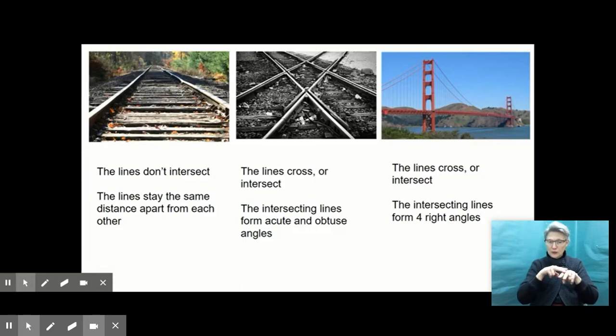Those I noticed were parallel lines. The next picture I saw here, I noticed that the lines crossed or intersected and that those intersecting lines formed angles. I saw acute and obtuse angles formed. Here I see an acute angle and over here I see an obtuse angle. Both types of angles are formed there.